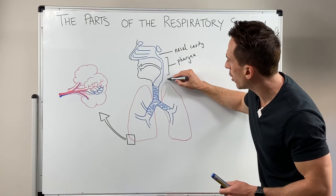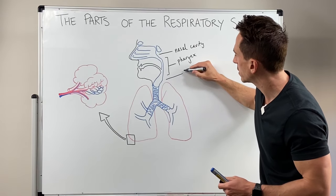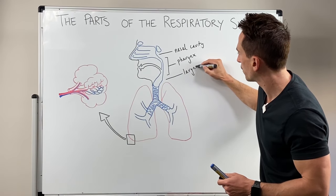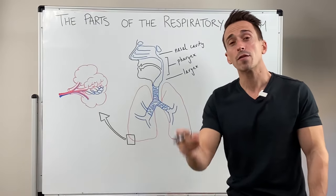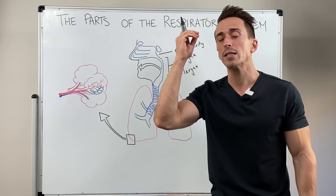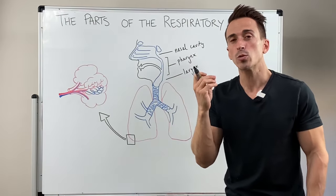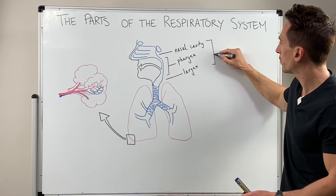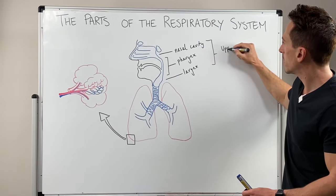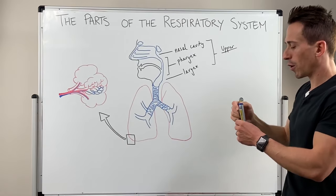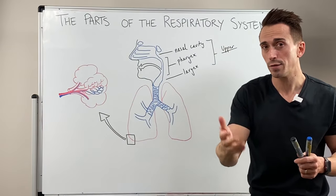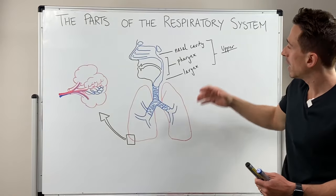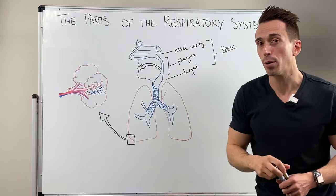Which means the next component is called the larynx. What we've just highlighted here — from the nasal cavity through the three aspects of the pharynx to the larynx — is what we call the upper respiratory tract. This is important clinically because you've heard of upper and lower respiratory tract infections, and upper respiratory tract infections involve these anatomical components.